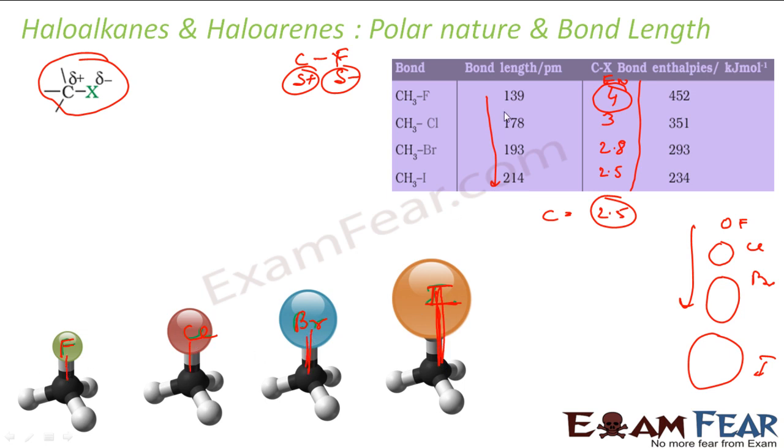This is the bond length. Hope you understood why the bond length is increasing. So, CH3-F has bond length of, C-F has the bond length of 139 picometer and C-I has the bond length of 240 picometer. Since bond length is more, it is easy to break. So, the energy required is less, so it is less stable.